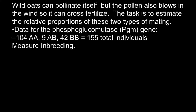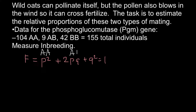First of all, I'm going to show you the Hardy-Weinberg formula, which stands for the frequencies of the three possible genotypes. Here is the formula: p² + 2pq + q² = 1. For p², we have the genotype capital A, capital A. For 2pq, we have the genotype capital A, capital B.